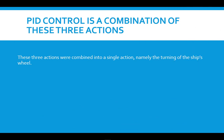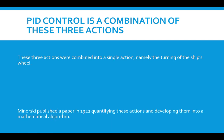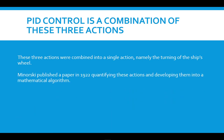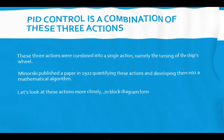These three actions were combined into a single action — namely the turning of the ship's wheel, which is all the controller could do. In 1922, Minorski published his results in a paper. Not only that, he quantified these actions and developed them into a mathematical algorithm. So we're going to look at those actions more closely in block diagram form.